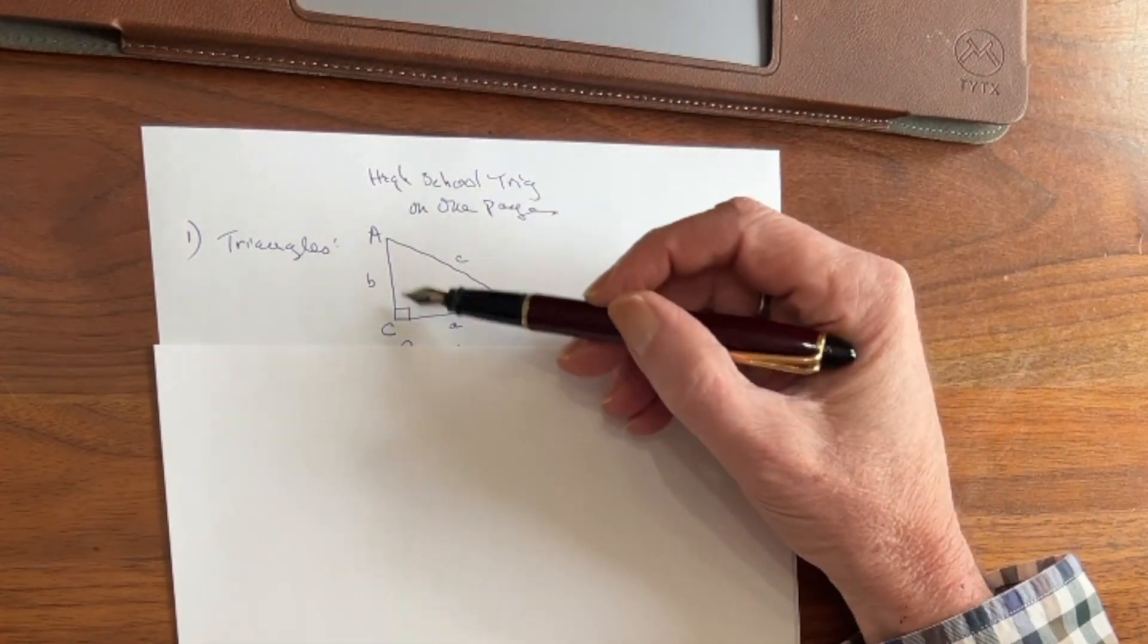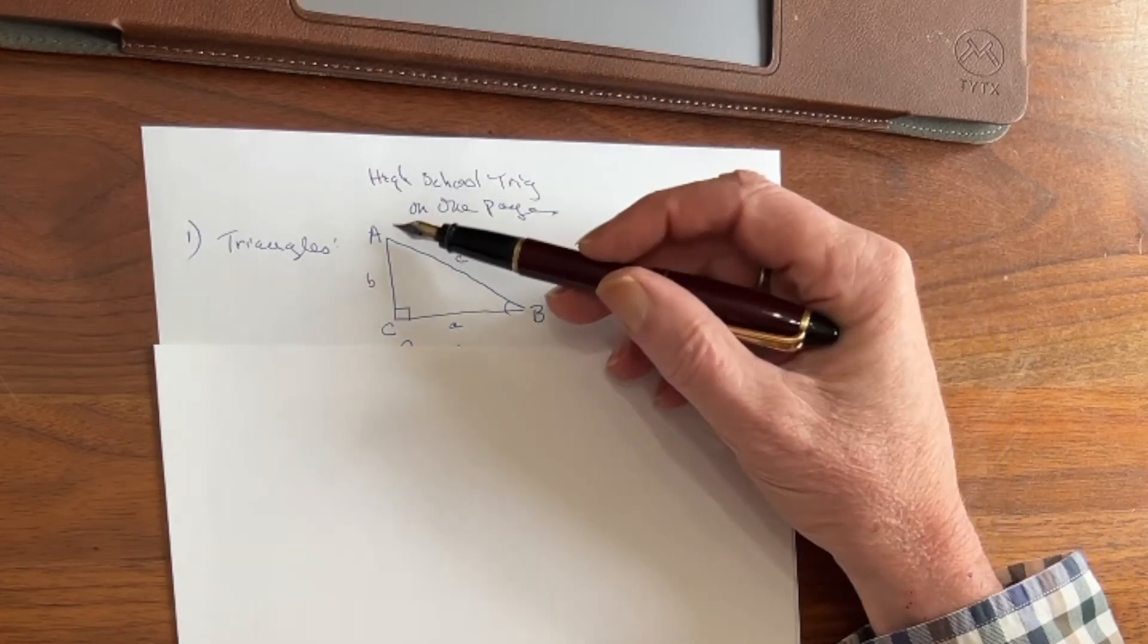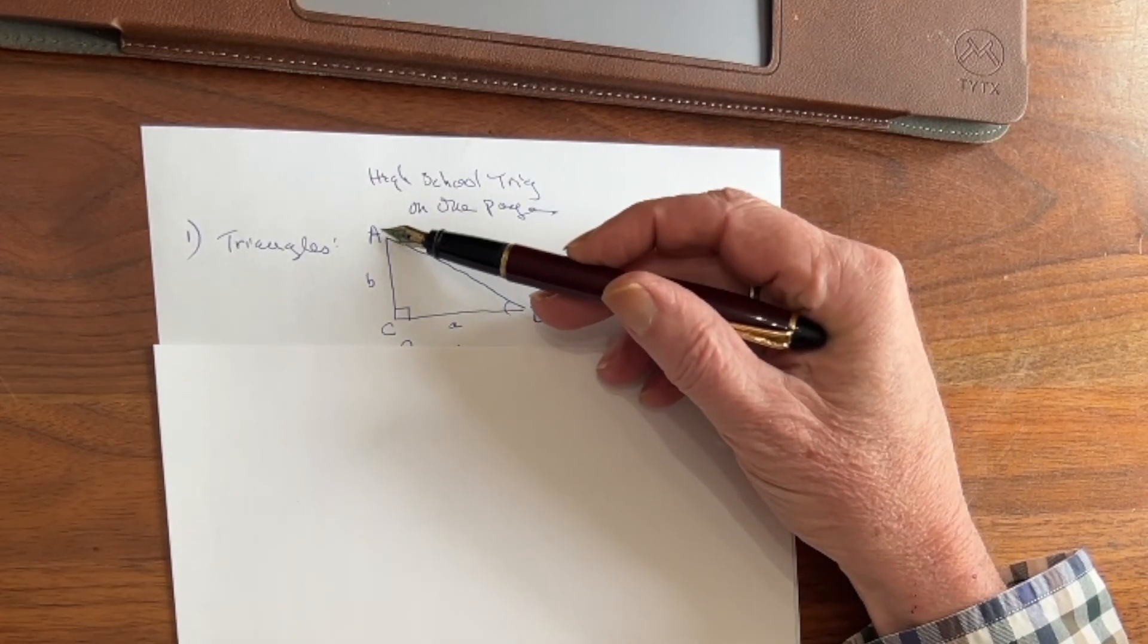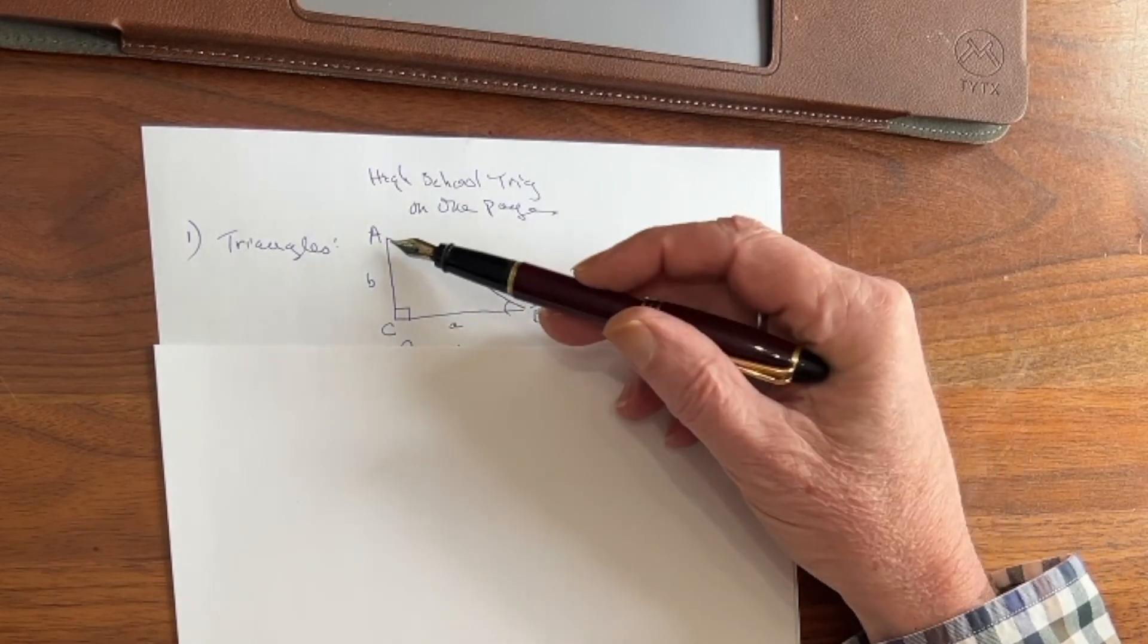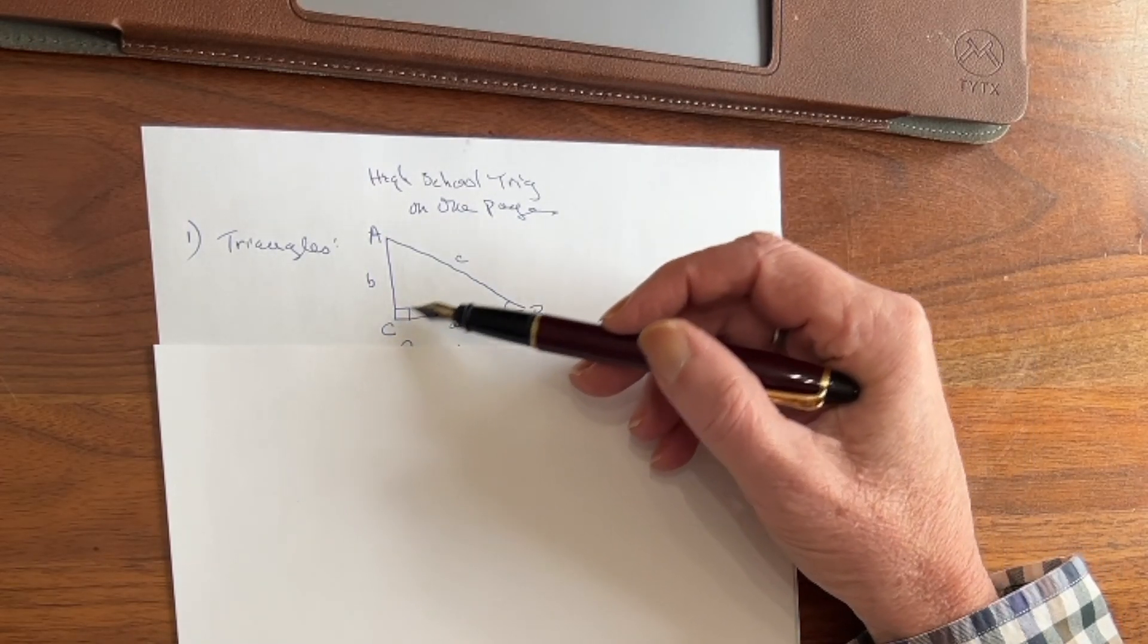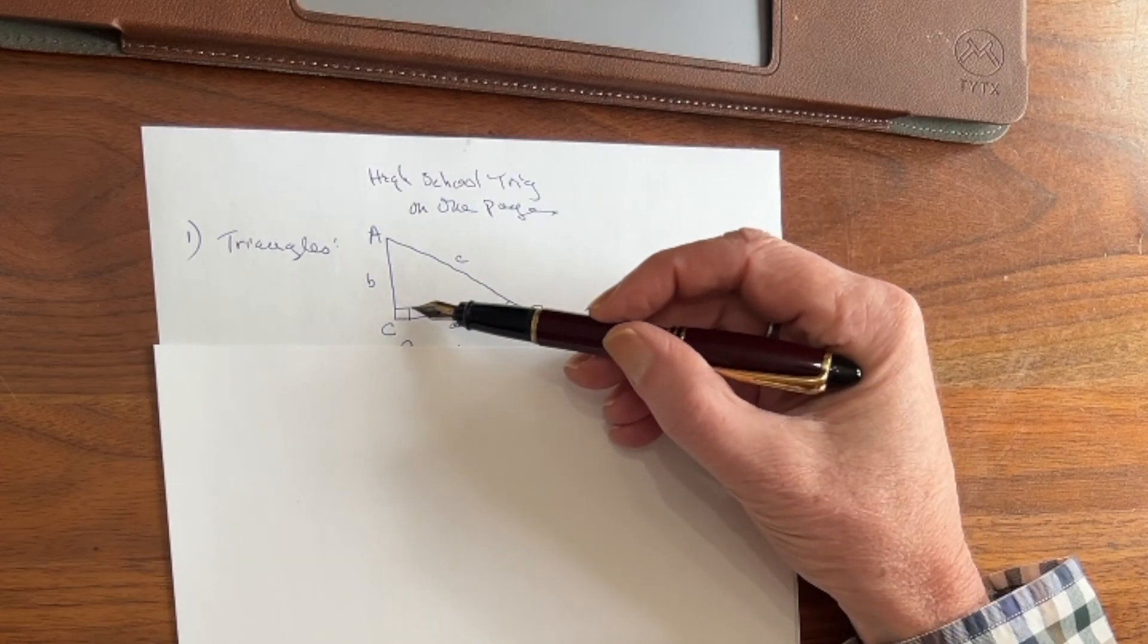Now, a triangle, of course, is three angles, and each angle and each point is defined by a capital letter: A, B, and C. C is generally the right angle, and that's what this little box denotes.